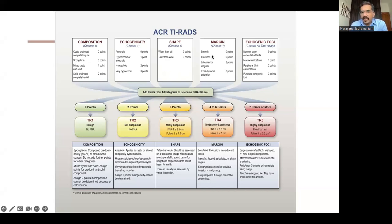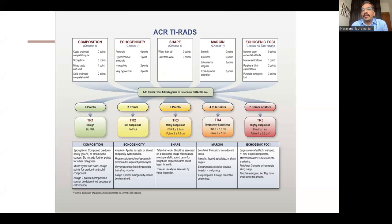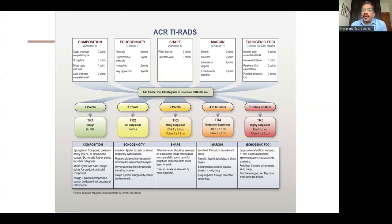For margins: smooth is zero points, ill-defined is zero points, lobulated or irregular is two points, and any identifiable extra-thyroidal extension — such as involving the strap muscles — is three points, indicating high suspicion of malignancy. For echogenic foci: none or large comet-tail artifacts are likely benign. Macro calcifications score one point, peripheral calcifications score two points, and punctate echogenic foci — microcalcifications — are the most suspicious at three points.